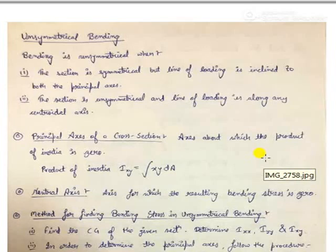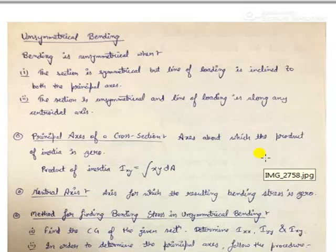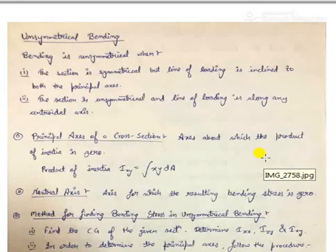Unsymmetrical bending is observed for two cases. Firstly, when the line of action of the loading is not parallel to the line of centroidal axis. In the second case, unsymmetrical bending is observed when the cross section on which the loading is to be applied is unsymmetrical. Moreover, when the line of action of the load is not coincident with the centroidal axis, we obtain what is known as unsymmetrical bending.